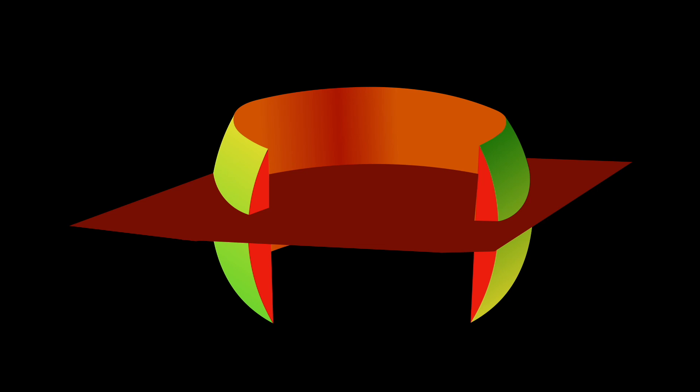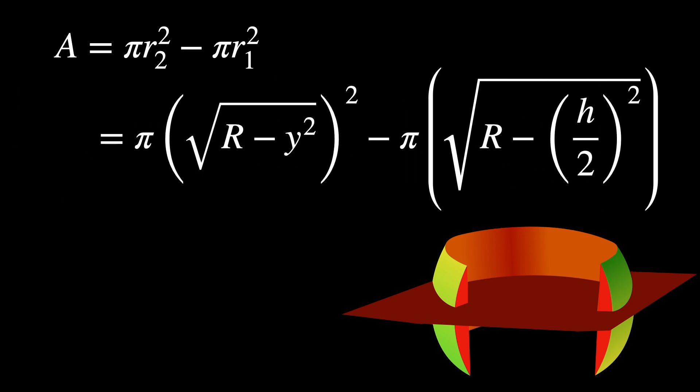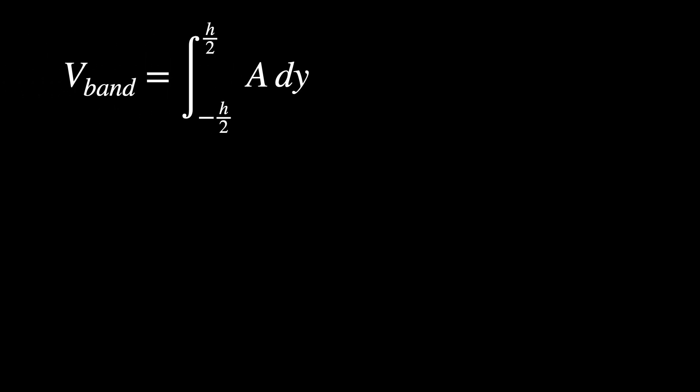Now, the cross-sectional area of this band can be expressed as A equals pi R2 squared minus pi R1 squared, which equals pi times h squared over 4 minus y squared. The cross-sectional area does not depend on the radius of the sphere. And thus, by Cavalieri's principle, the volume of the band is the integral from minus h over 2 to h over 2 of A dy. Working on the math here, we get pi h cubed over 6 for all spheres of all radii.